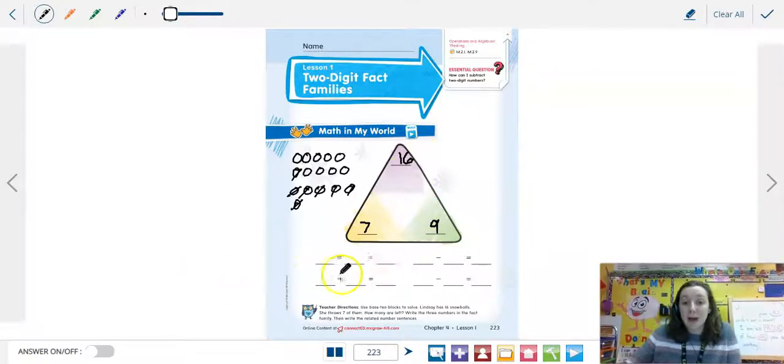So for our fact families, now that we have our three numbers and our related number sentences, the addition of course is the two parts equal the whole. So 7 plus 9 equals 16. And of course, we know with addition you have a turnaround fact. So the other piece, 9 plus 7 equals 16.